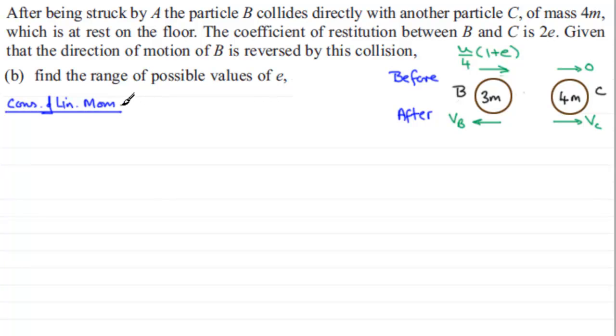We'll take to the right as the positive sense. So what we've got then is for the initial momentum for B, we've got the mass which is 3M multiplied by its velocity, U/4 multiplied by 1 plus E. And there's no momentum for particle C because it's got no velocity.